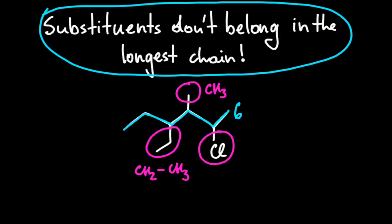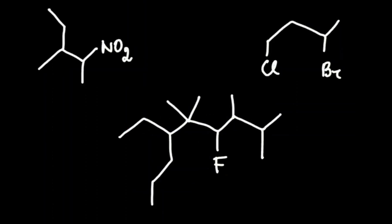Let's look at a few examples and find the longest chain and substituents. So the longest chain is five carbons right here and everything that is not part of the longest chain is substituents. So here and here.